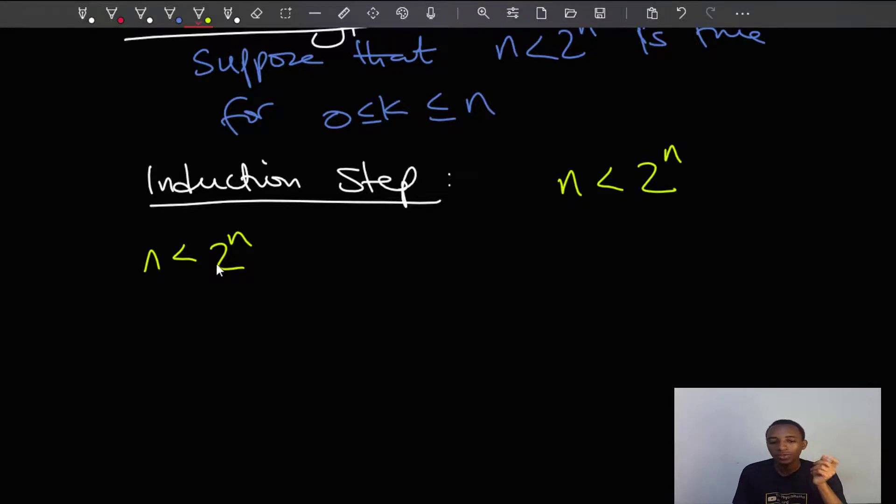If I just add 1 on both sides of this, you can see that n plus 1 is less than 2 to the power n plus 1. Of course, that should be trivial because adding 1 on both sides doesn't change the state of affairs that much because I could as well subtract 1 on both sides and I just get back to this.